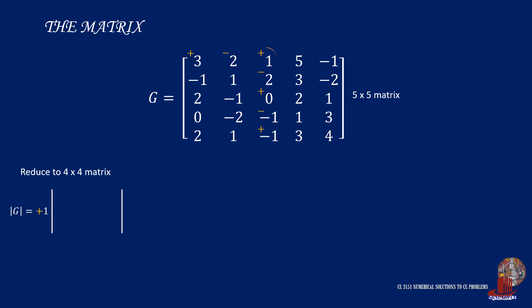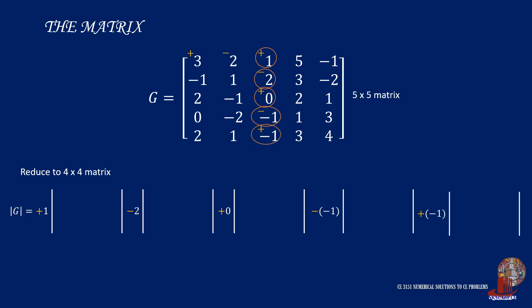Now let's outline the reduced matrices. The first term has positive 1 and 4 as scalar. Then negative 2 precedes the second term. The third term has 0 as scalar. Then minus negative 1 connects the fourth term. The fifth term is preceded by plus negative 1. With the five terms to solve for the determinant, check that the third term has 0 as scalar, which makes the whole term 0.